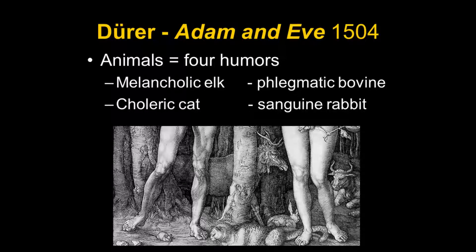The animals, Panofsky tells us, represent the four humors — what we would think of as hormones. If you have too much black bile, you are melancholic; too much yellow bile, choleric; too much phlegm, phlegmatic; blood dominates and you're sanguine. It was believed these four humors controlled health. In Adam and Eve, before they sinned, before they took the forbidden fruit, they were in perfect harmony. But after the fall of man, the humors were out of whack, and man had disease and death.